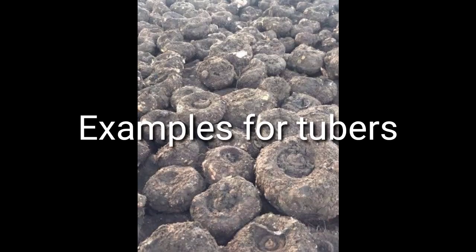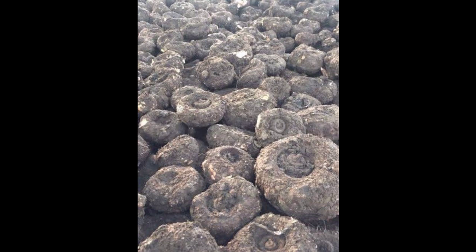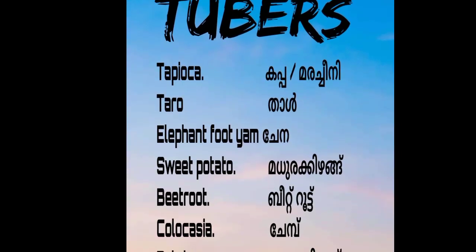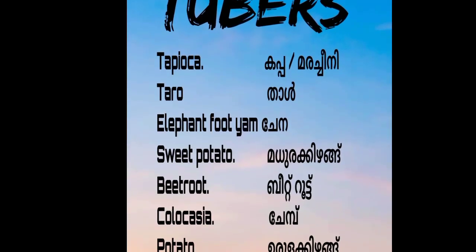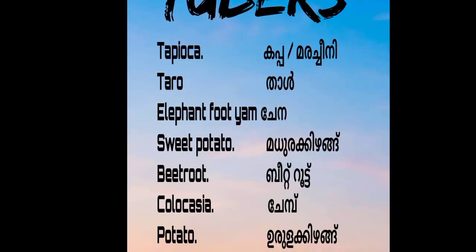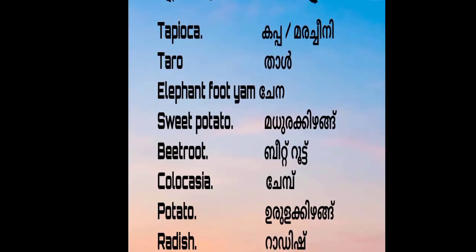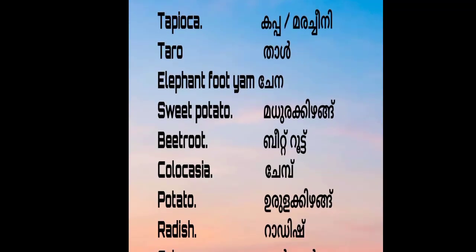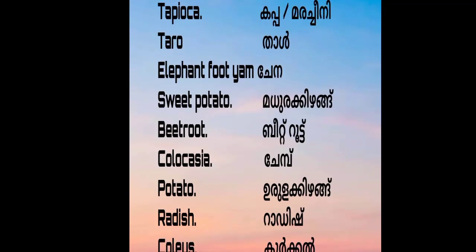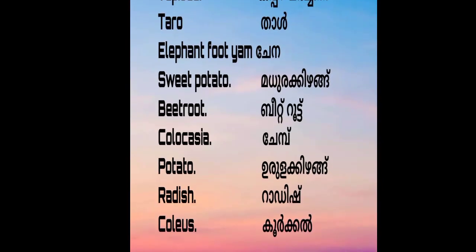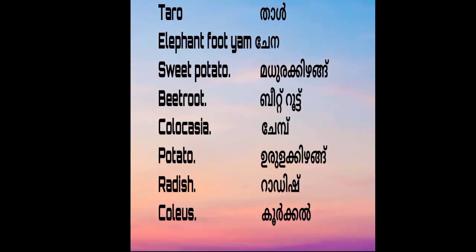Examples of tubers: Tapioca (Kappa/Cassava), Taro (Thalu), Elephant Yam (Chena/Amorphophallus), Seed Potato, Beetroot, Caucasian Chamber Potato (Urlakkalanga), and Radish (Koleos).